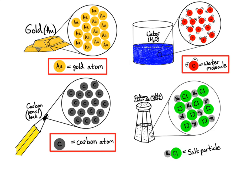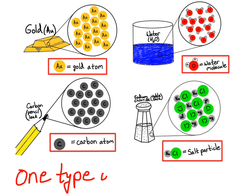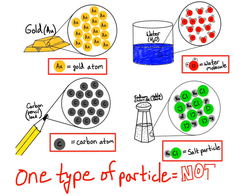Water is made up of just water molecules — one type of particle. And sodium chloride: if we could see those particles, we'd see only the sodium chloride salt particle. Because each of these substances — gold, carbon, water, and sodium chloride — is only made up of one type of particle, these are not mixtures. By definition, a mixture is made up of two or more different types of particles.